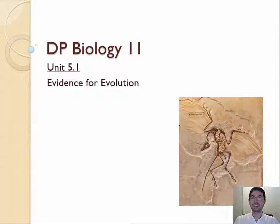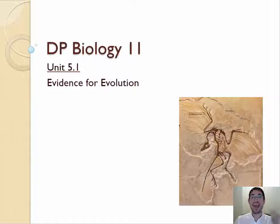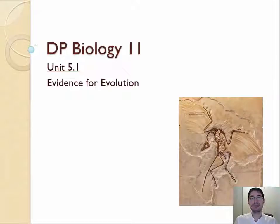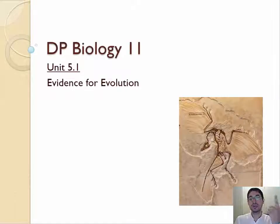Hello everyone. This lecture is on 5.1, evidence for evolution. There are really three main pieces of evidence you're going to need to know: homologous structures, fossils, and selective breeding.